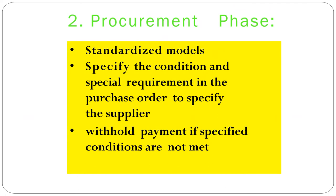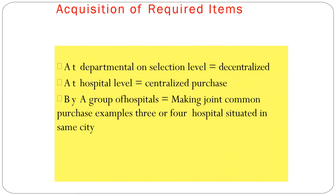The second step is the procurement phase, which means placing the order to purchase. The purchase department must ensure standardized models are ordered, conditions and special requirements are specified in the purchase order, and suppliers are identified. Payment can be withheld if specified requirements are not met. Items can be purchased at three levels: decentralized purchase, centralized purchase, or joint purchase.